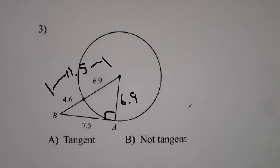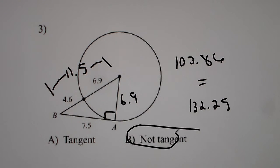So we got to do 7.5 squared plus 6.9 squared. We get 103.86. And we want to see if that is equal to 11.5 squared. Which is not. It's 132.25. So it's not tangent. They have to be equal in order for it to be tangent.